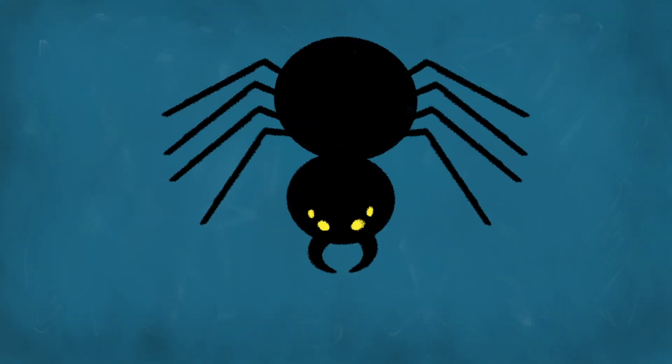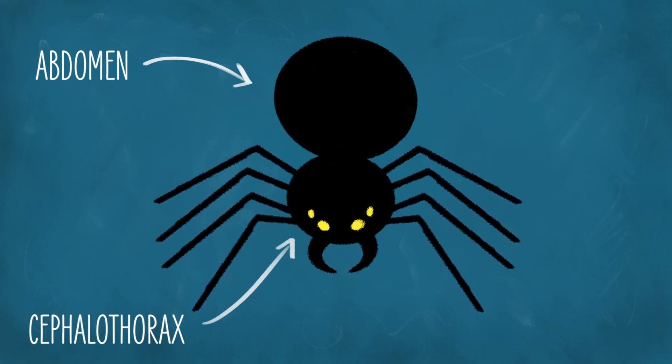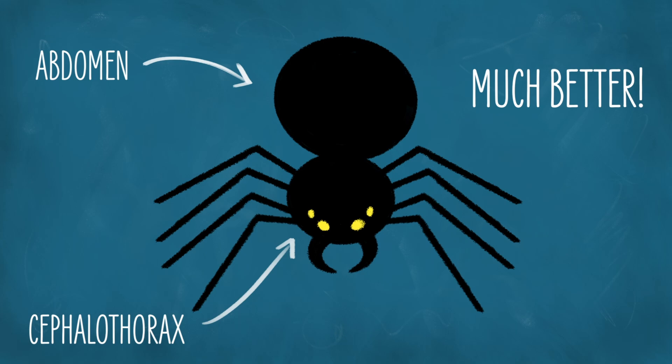Hopefully you noticed that the legs come off of the front segment. It is amazing how much more realistic our drawing becomes if we simply move the legs from the back segment — the abdomen — to the front segment, called the cephalothorax or prosoma. Notice that we haven't changed anything else about this drawing. Most people think that the legs are on the abdomen, but almost everyone recognizes the spider as more realistic when the legs are moved to the correct location.